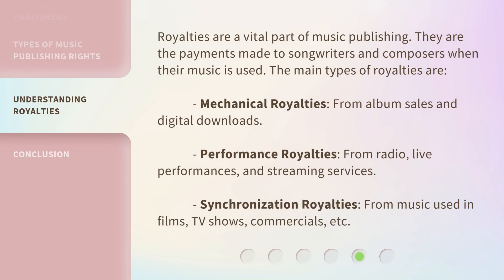Royalties are a vital part of music publishing. They are the payments made to songwriters and composers when their music is used. The main types of royalties are: mechanical royalties from album sales and digital downloads; performance royalties from radio, live performances, and streaming services; and synchronization royalties from music used in films, TV shows, commercials, etc.